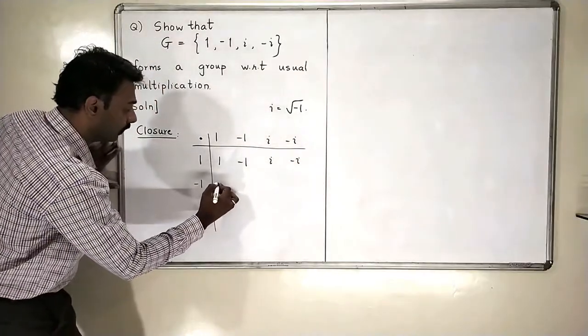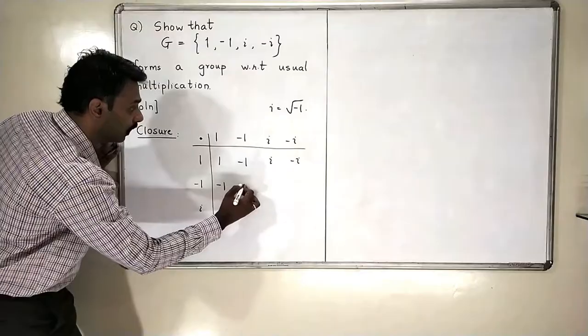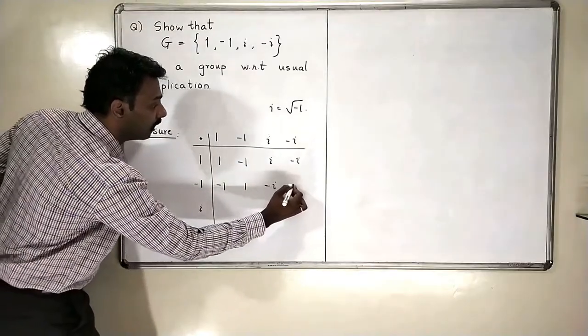This is, again, I am going to multiply minus 1 to all the elements: minus 1, 1, minus i, i.